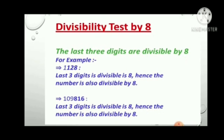Test of divisibility by 8. The last 3 digits must be divisible by 8. Here you have to check the last 3 digits. If the last 3 digits are divisible by 8, then the whole number is divisible by 8. For example, 1128: check if 128 is divisible by 8 — if yes, then 1128 is divisible by 8. For 109816: check if 816 is divisible by 8 — if yes, then 109816 is divisible by 8.